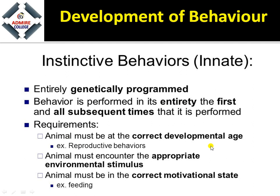The requirements for instinctive behavior are: the animal must be at the correct developmental age, the animal must encounter the appropriate environmental stimulus, and the animal must be in the correct motivational state. So innate or instinctive behavior is built into the genes — it is behavior that an organism does not learn from the environment.